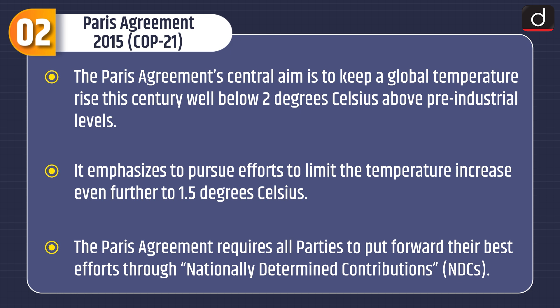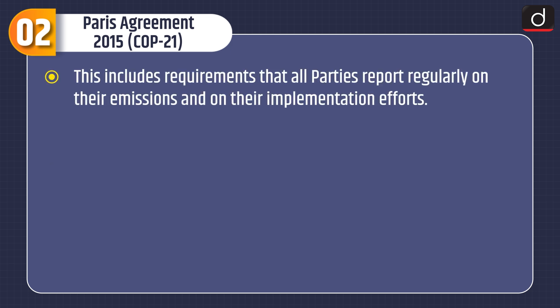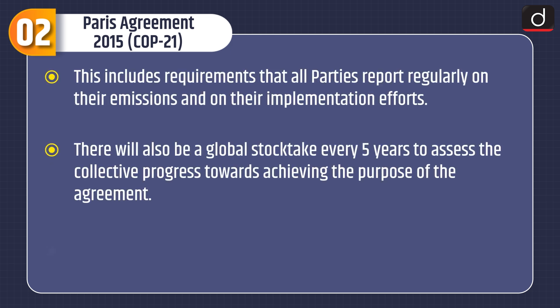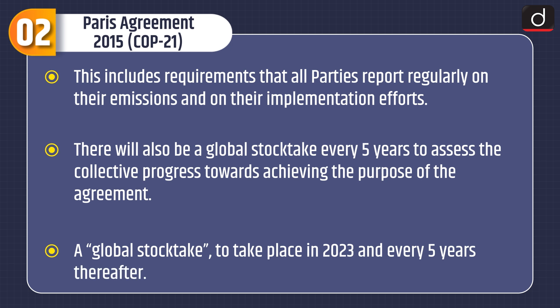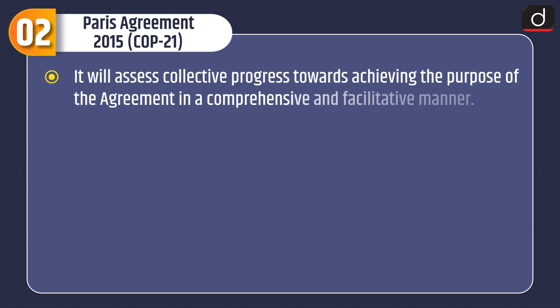The Paris Agreement emphasizes pursuing efforts to limit the temperature increase to 1.5 degrees Celsius. It requires all parties to put forward their best efforts through Nationally Determined Contributions or NDCs, including requirements that all parties report regularly on their emissions and implementation efforts. There will also be a global stocktake every 5 years to assess collective progress towards achieving the purpose of the agreement, with the first global stocktake to take place in 2023.